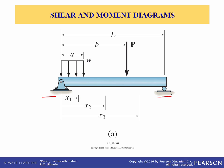The actual design of a beam requires a detailed knowledge of the variation of the internal shear force V and the bending moment M acting at each point along the axis of the beam. These variations of the shear force and bending moment along the beam's axis can be obtained by using the method of sections from chapter 7.1. In this case, however, it's necessary to section the beam at an arbitrary distance x from one end and then apply the equations of equilibrium to the segment having the length x. Doing this, we can obtain the shear force and the bending moment as functions of x.